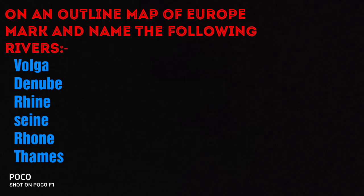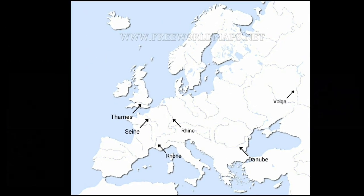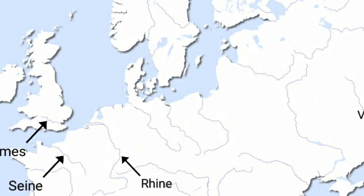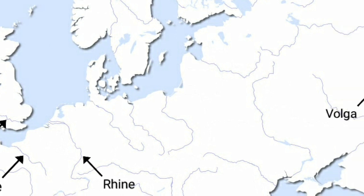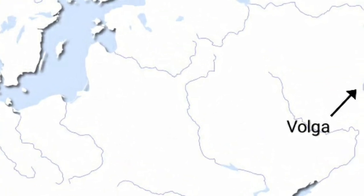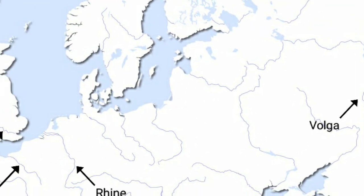Next, on an outline map of Europe, mark and name the following rivers. All these rivers will again be marked with the help of blue pencil colour. This map deals with the important rivers of Europe. Keep in mind that the arrows are pointing at the river. Starting with the longest river in Europe, we have the Volga.